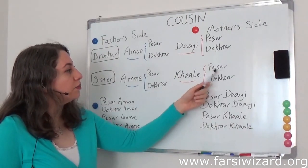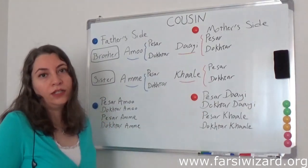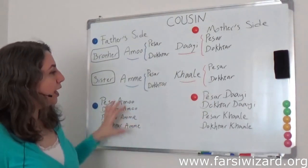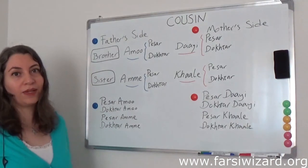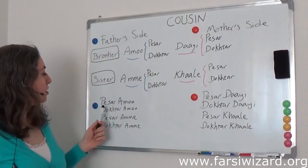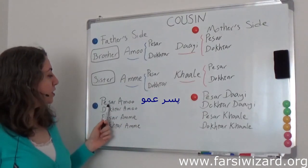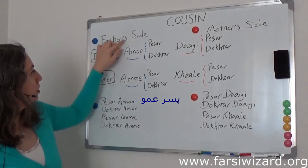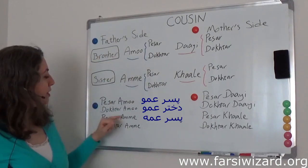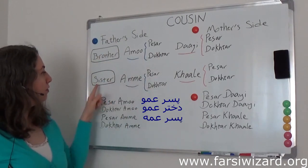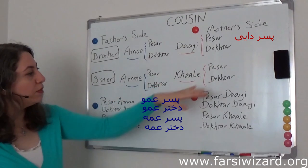And with 'khala,' we have 'pesar khala' — son of maternal aunt — and 'dokhtar khala' — daughter of maternal aunt. So we actually have eight words for cousin, each specifying exactly which cousin we're talking about. You cannot get more specific than this. So 'pesar amu' is the son of your paternal uncle, 'dokhtar amu' is the daughter of your paternal uncle, 'pesar amme' is the son of your paternal aunt, and 'dokhtar amme' is the daughter of your paternal aunt.